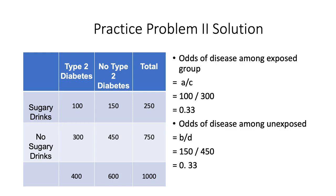The 2 by 2 table is divided by exposure and disease status, showing type 2 diabetes versus no type 2 diabetes, and individuals who drink sugary drinks versus those who do not. To calculate the odds of disease among the exposed group, we divide A over C: 100 divided by 150, giving us 0.33. The odds of disease among the unexposed group is B over D: 150 divided by 450, which also gives us 0.33.